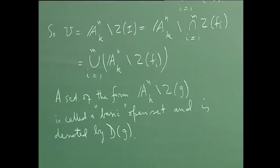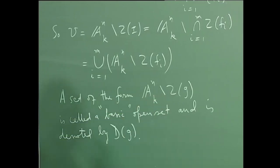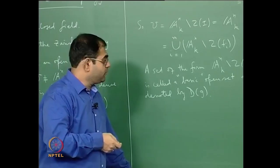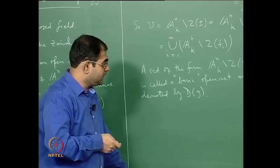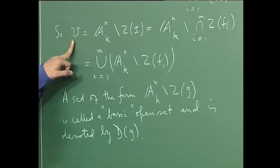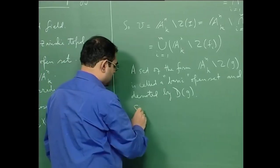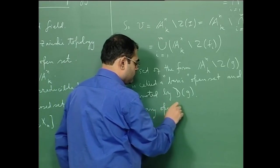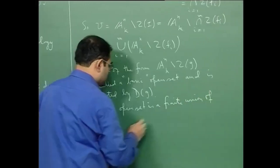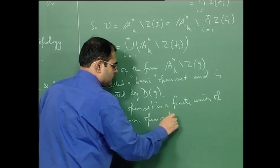D(g) is the locus where g does not vanish; it is the complement of Z(g), which is the locus where g vanishes. Such sets D(g) are called basic open sets. What we have just seen is that any non-trivial open set is a finite union of basic open sets.